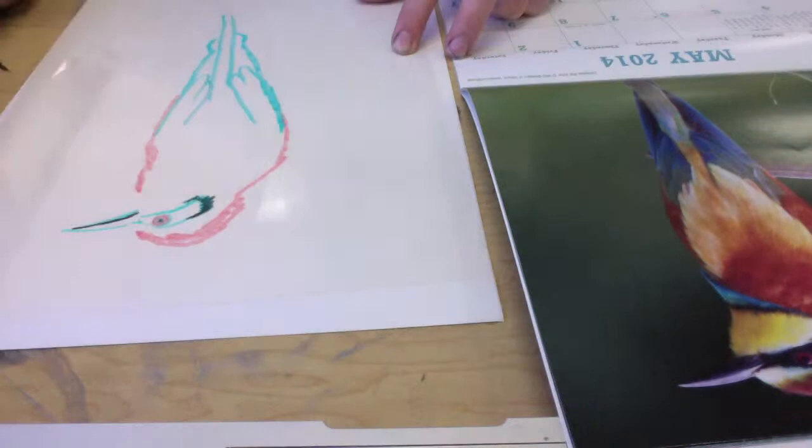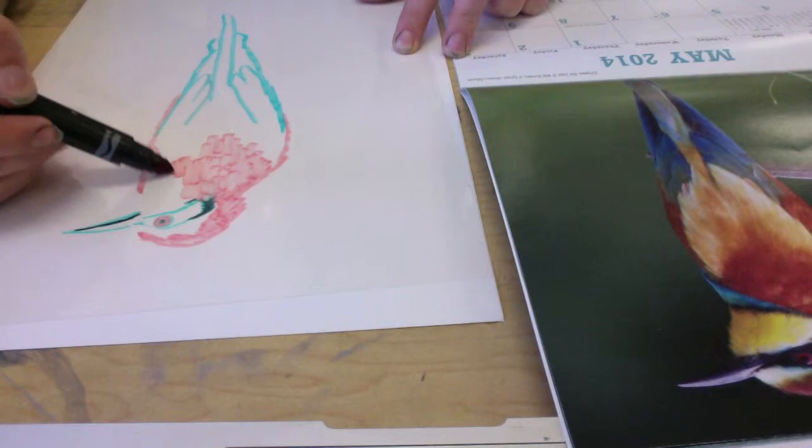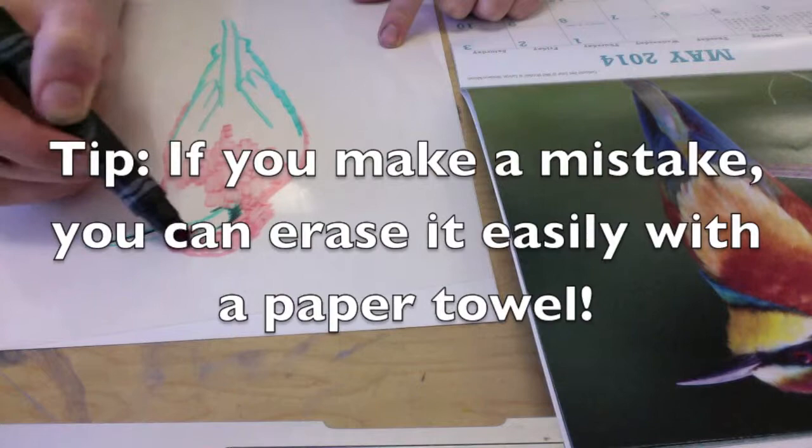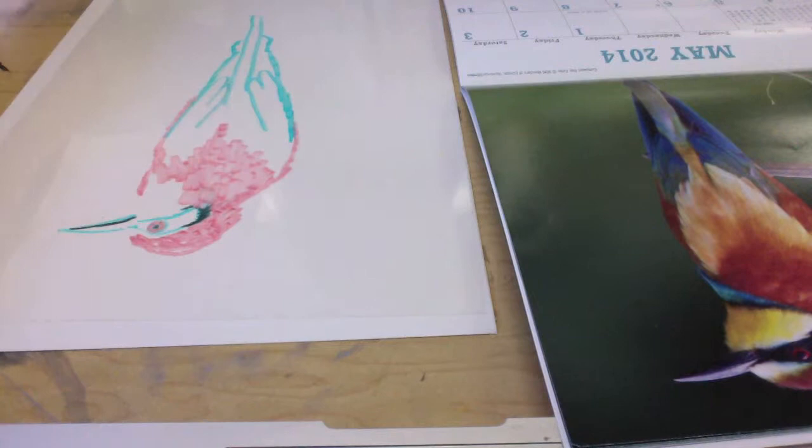And the nice thing about this technique is that if you make any mistakes at all, you can just wipe it off with a paper towel. Or you can go over it with another marker. You can also mix colors together really nicely.